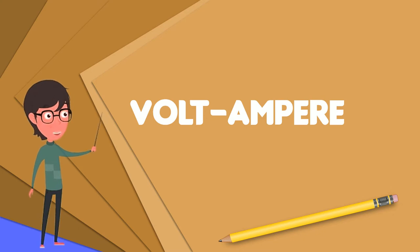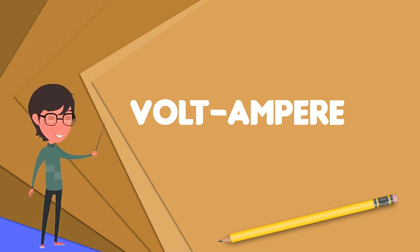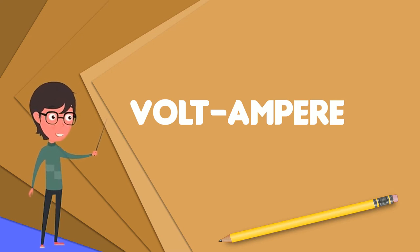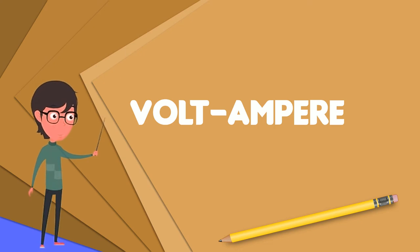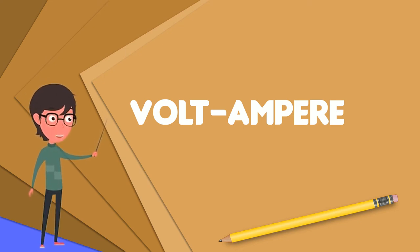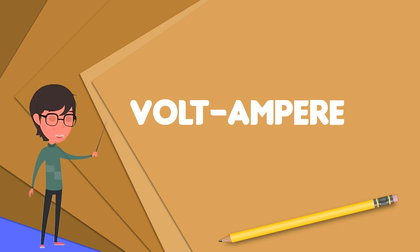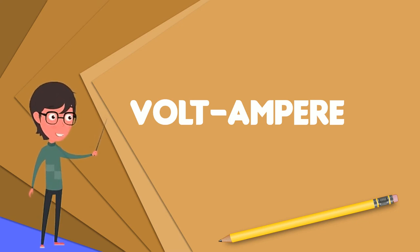When a UPS powers equipment which presents a reactive load with a low power factor, neither limit may safely be exceeded. For example, a UPS system rated to deliver 400,000 volt-amperes at 220 volts can deliver a current of 1,818 amperes.